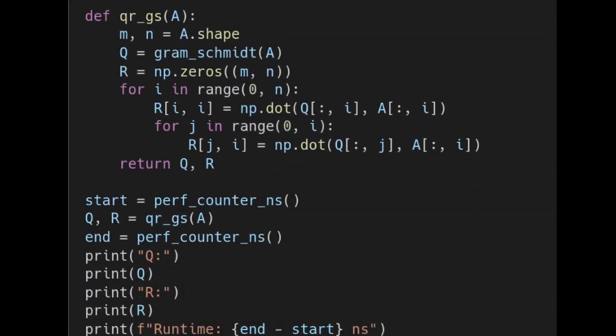So in the second function here, qr_gs, that stands for QR by Gram-Schmidt, we're accepting some A matrix right here, that randomly generated A matrix that I showed you from before. The first thing we're doing is we're getting the shape of that A matrix, which should be square. Here we're generating our Q matrix with our gram_schmidt function. And then we are generating a matrix of all zeros.